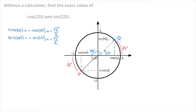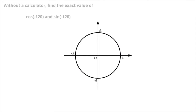Let's look at one last example. Once more, we're told without a calculator to find the exact value of cosine of negative 120 and sine of negative 120. Starting from the point (1, 0), the point corresponding to an angle of negative 120 is found by moving clockwise around the unit circle through an angle of 120 degrees. That corresponds to this point here, which I'll just add now — that's point P. And as always, I draw the radius OP, and this corresponds to the angle negative 120 degrees.